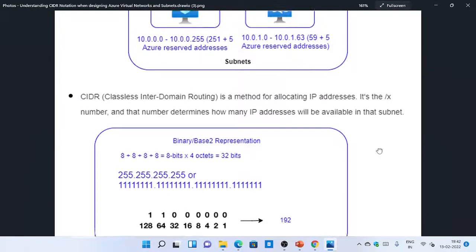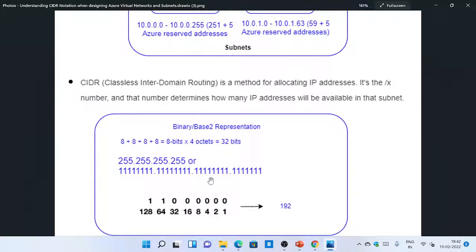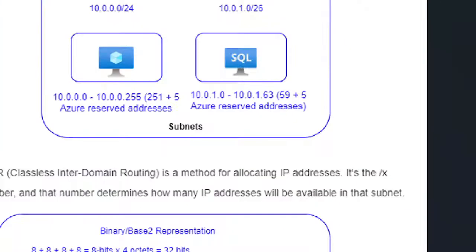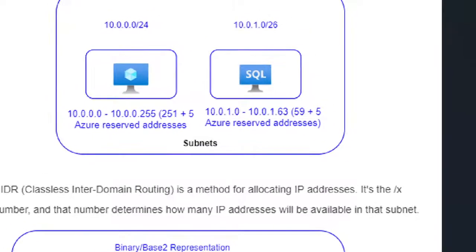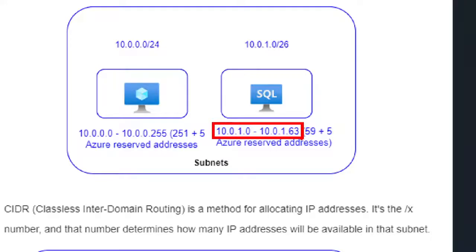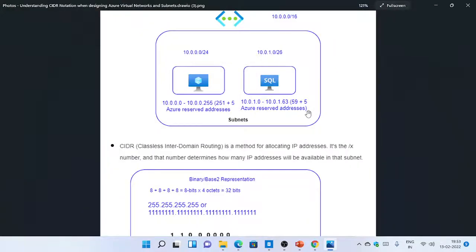Out of 32 bits, 26 are the mask itself. The remaining 6 bits can be varied, and that gives you 32 plus 16 plus 8 plus 4 plus 2 plus 1, which gives me close to 63 IP addresses. You can see the range is 10.0.1.0 to 10.0.1.63. In that range, 59 IP addresses can be allocated, because 5 IP addresses are reserved by Azure itself. So 59 addresses are usable — that's your address range for this particular subnet.